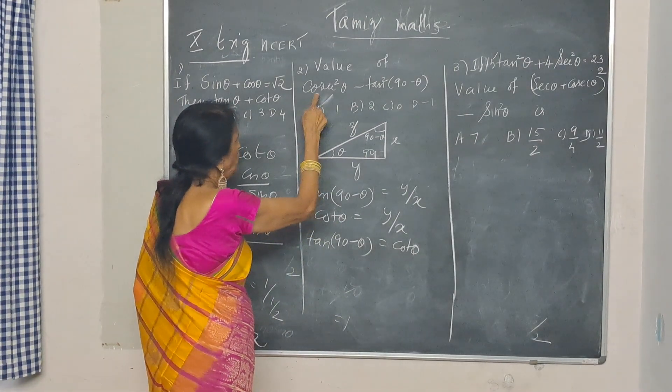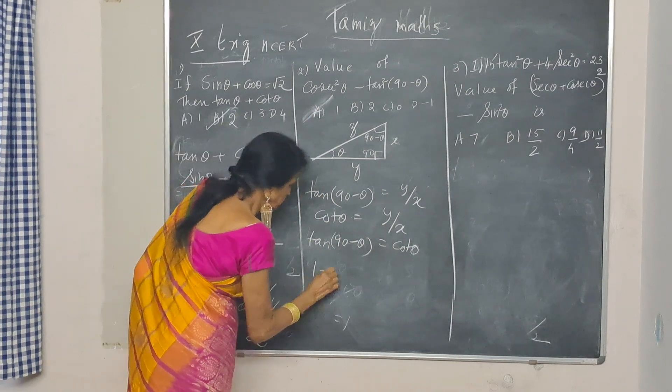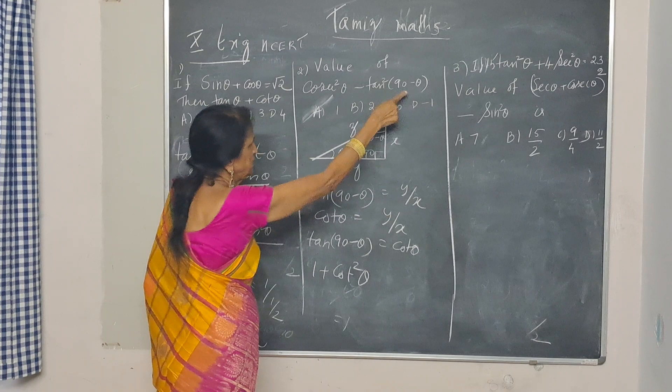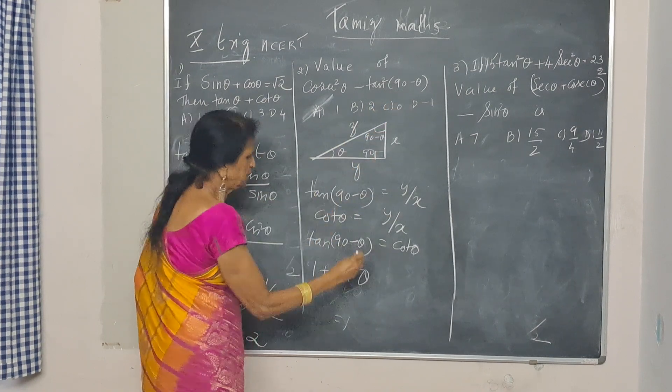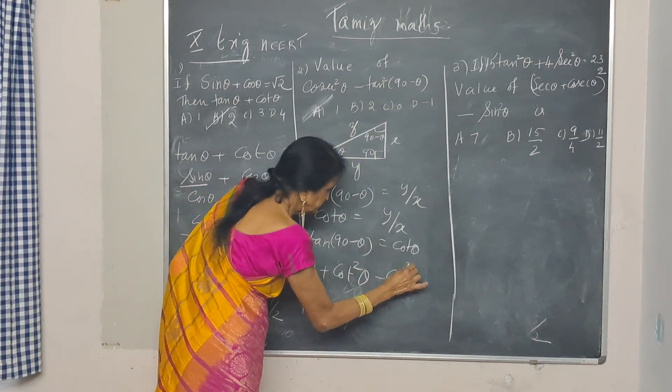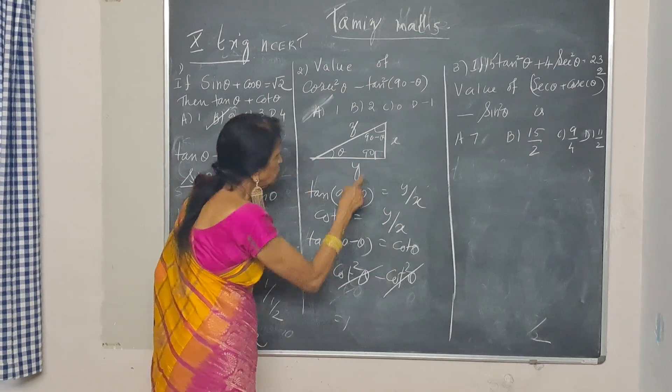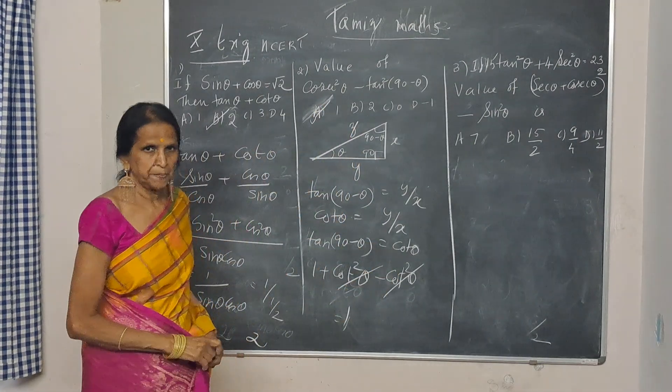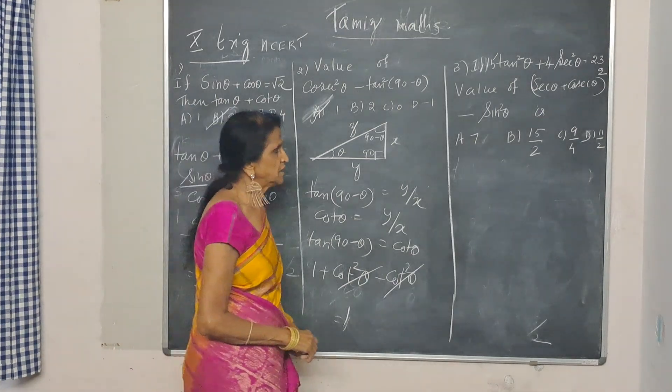Now, come to this. Cosecant square theta. What is tan 90 minus theta? Cosecant square theta minus cot square theta equals 1. So, that's the answer to that.